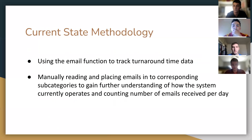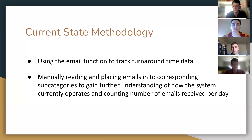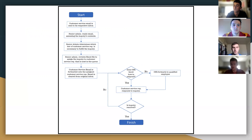To address the first objective, we gathered data from the current email system to build a current-state understanding. We used two main methods: to track turnaround time, we used an email function that American Equity provided; and to find inquiry categorization, we manually read and placed emails into their corresponding subcategories. This gave us a flowchart showing how the system was operating. As you can see, there is a lot of front-loading — it was mostly going through one person and was very irregular and overall inefficient.